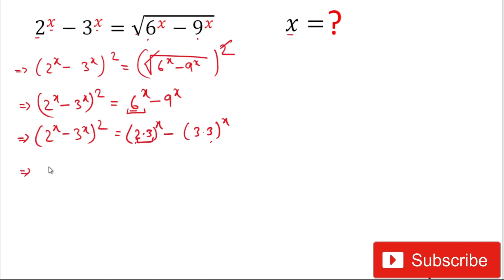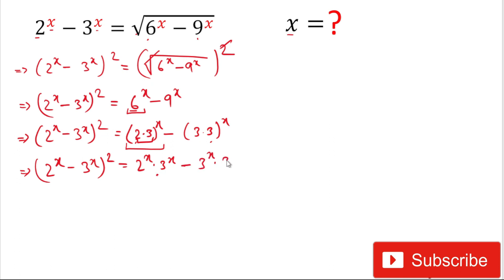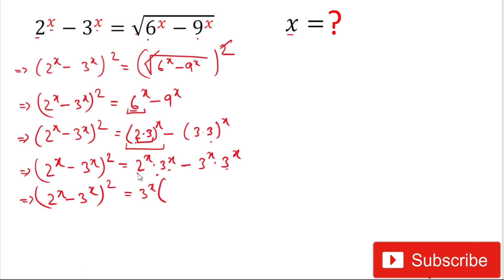On the left hand side we keep (2^x minus 3^x) whole squared as it is. On the right hand side, we separate the powers: 6^x becomes 2^x times 3^x, and 9^x becomes 3^x times 3^x. We can see that 3^x is common on the right hand side, so we factor it out: 3^x times (2^x minus 3^x).